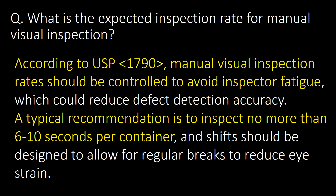What is the expected inspection rate for manual visual inspection? According to USP chapter 1790, manual visual inspection rates should be controlled to avoid inspector fatigue. A typical recommendation is to inspect no more than 6 to 10 seconds per container.